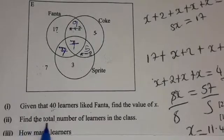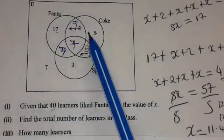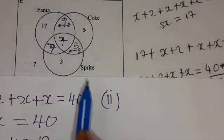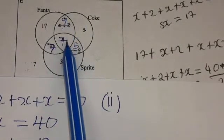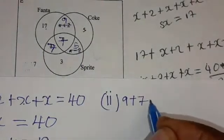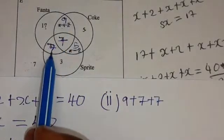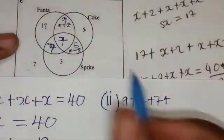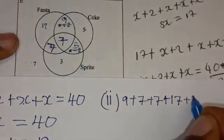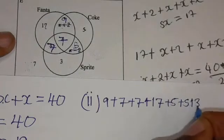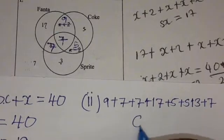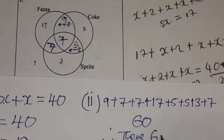Part 2 asks: find the total number of learners in the class. To avoid mistakes, let's first add the learners on the intersections: 9 plus 7 plus 7. Then add 17 for the rest of set Fanta. Then add 5 plus 5 plus 5 plus 3, plus 7. When you calculate this on the calculator, you get 60 learners. Therefore, there are 60 learners in this class.